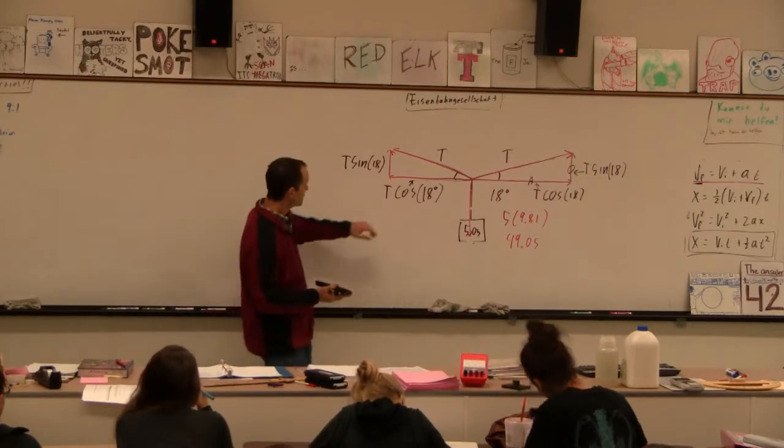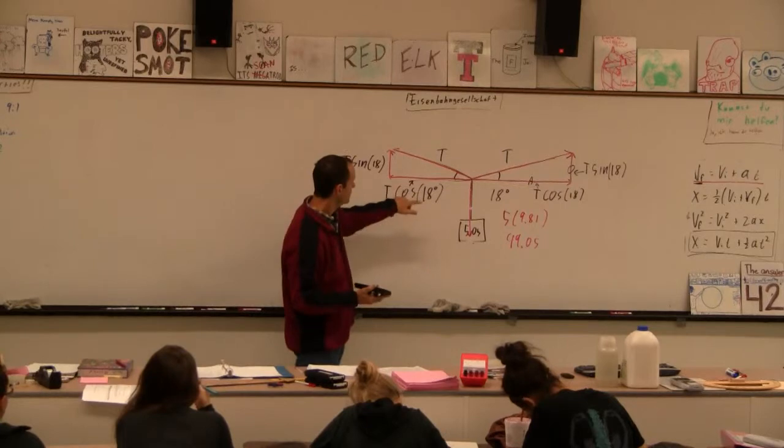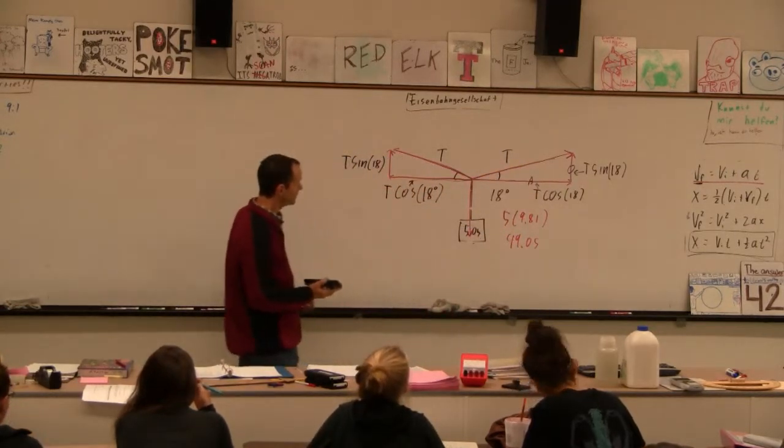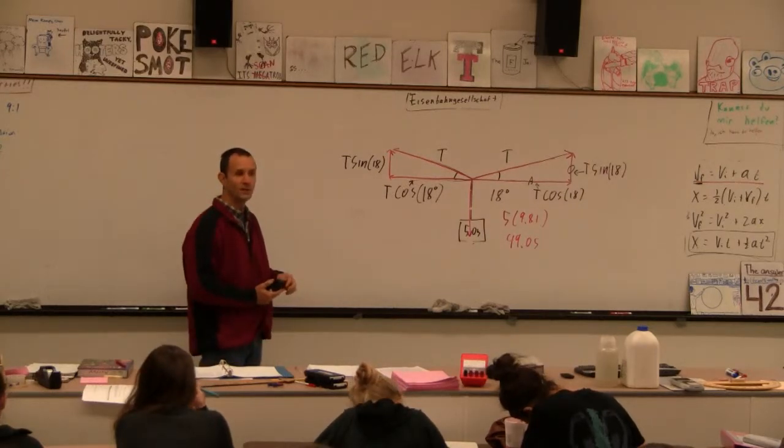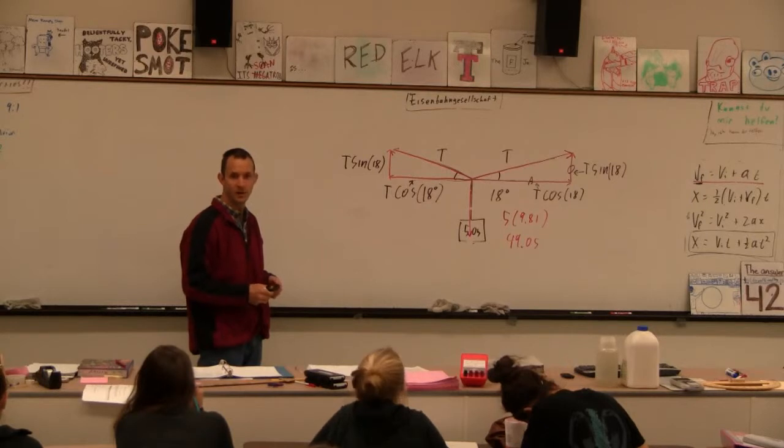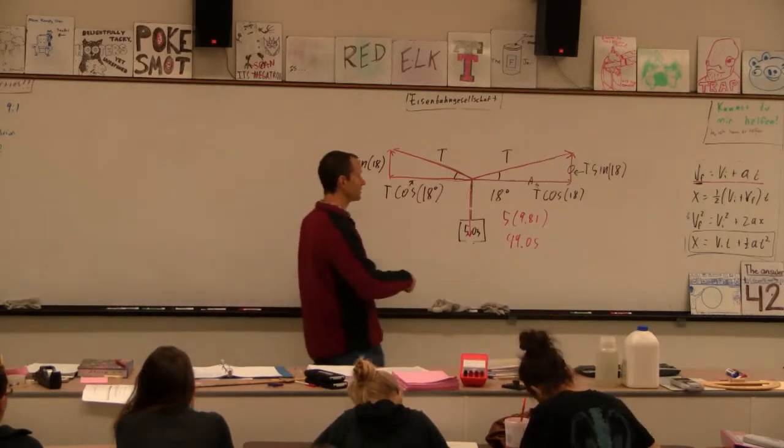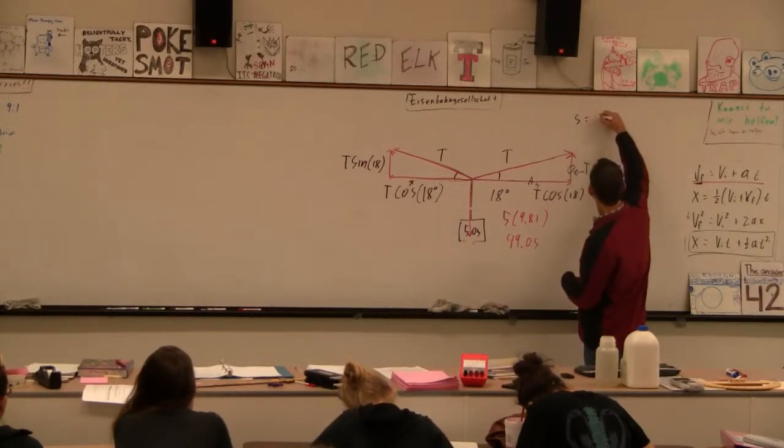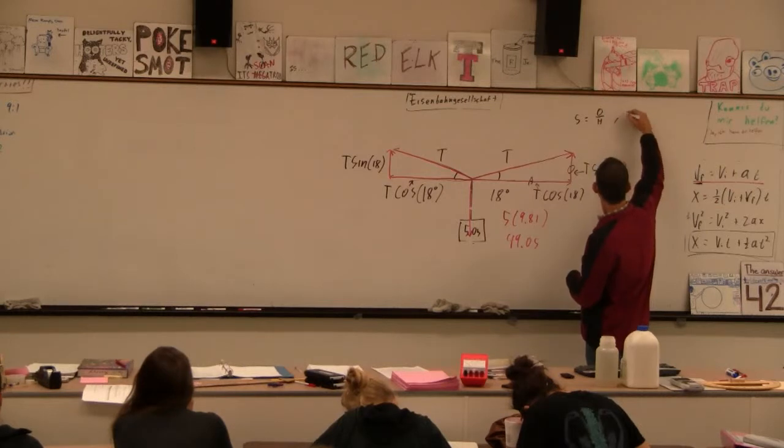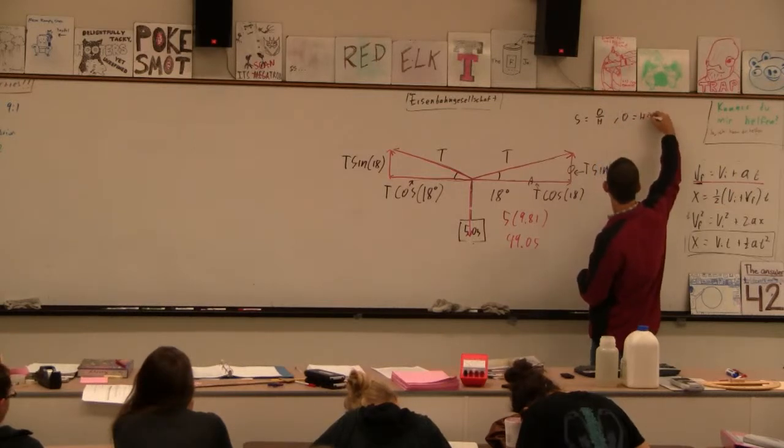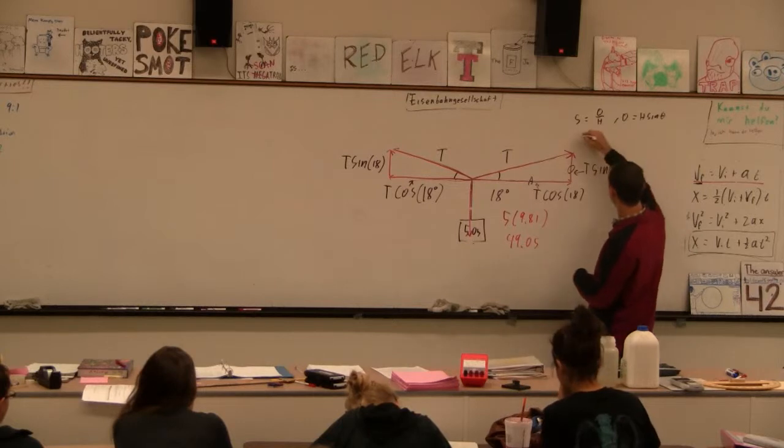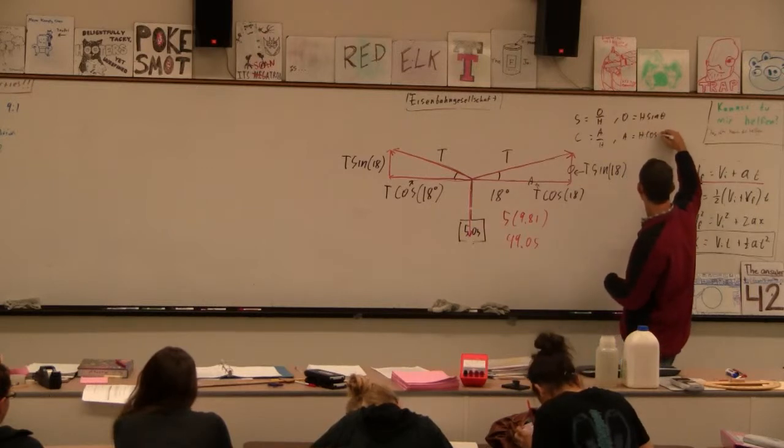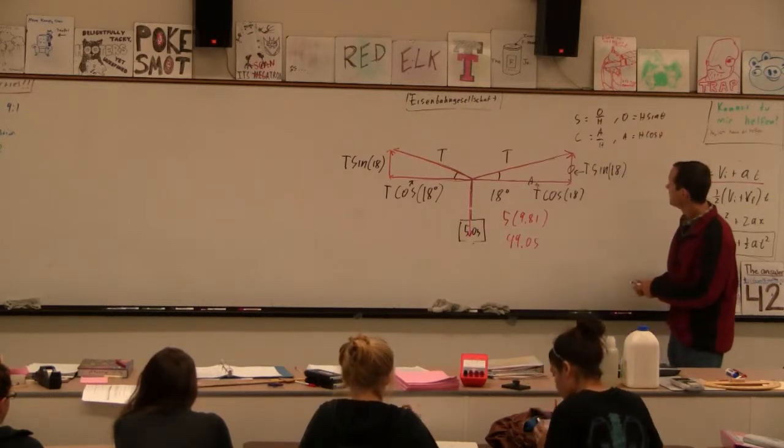So we've got these guys fighting against each other in the X direction. We've got these guys in the Y direction fighting against this guy in the Y direction. So does everybody know why one's cos and one's sine? Let me explain it anyway. This is the opposite side, remember sine is opposite over hypotenuse, so therefore the opposite side is H sine theta. And then cosine is adjacent over hypotenuse, so the adjacent side is H cos theta. SOHCAHTOA.